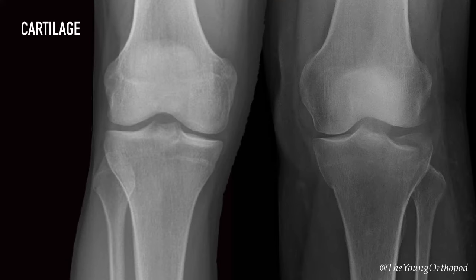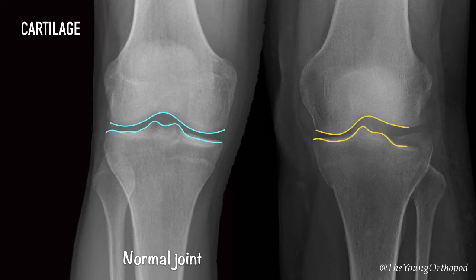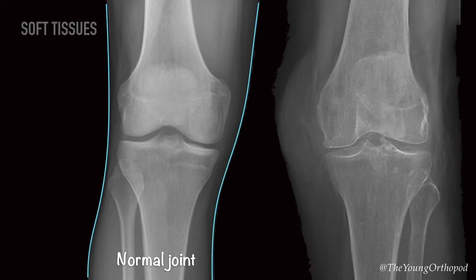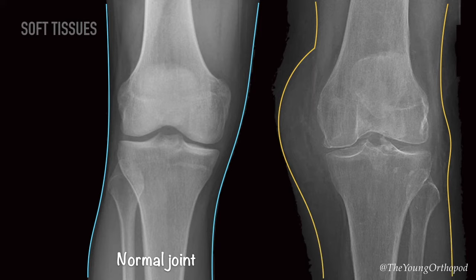Cartilage refers to examining the joint spaces on the radiograph. Widening of the joint spaces indicates ligamentous injury or fractures. One must not miss soft tissue swelling and joint effusions, as these can be signs of occult fractures.